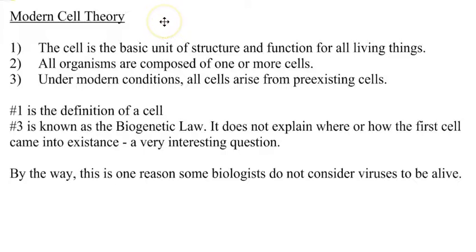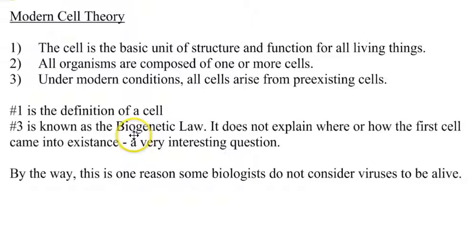Taking all these discoveries together, you end up with what's known as the modern cell theory, which has three parts. Number one: the cell is the basic unit of structure and function for all living things. Number two: all organisms are composed of one or more cells. Number three: under modern conditions, all cells arise from preexisting cells — this is known as the biogenetic law. It explains where new cells come from, but doesn't explain where the very first cell came from.